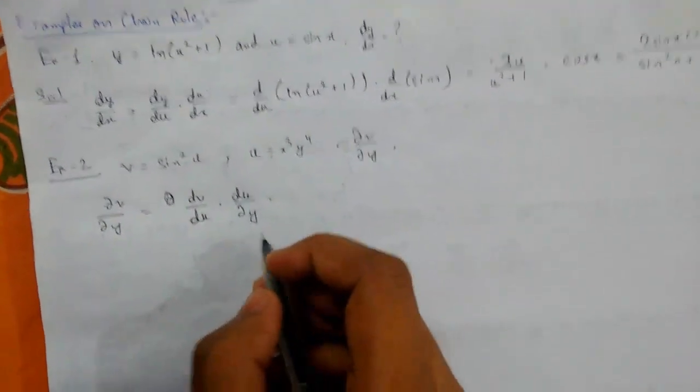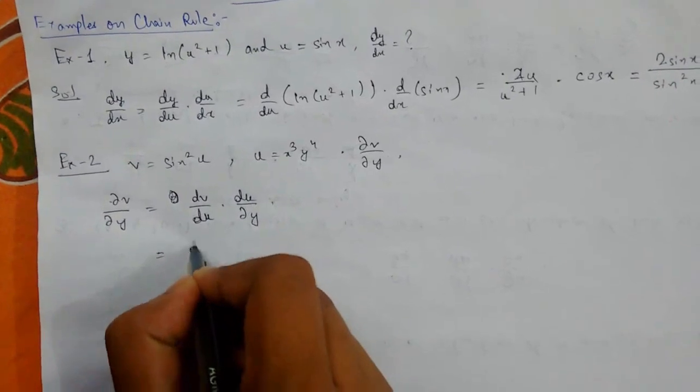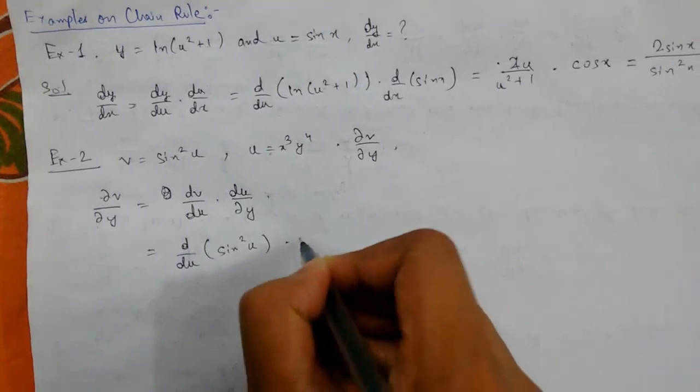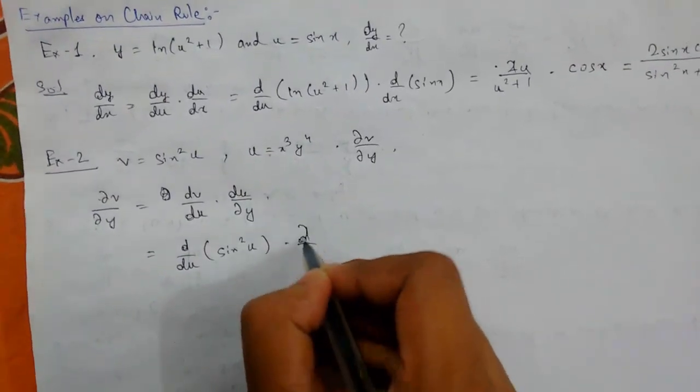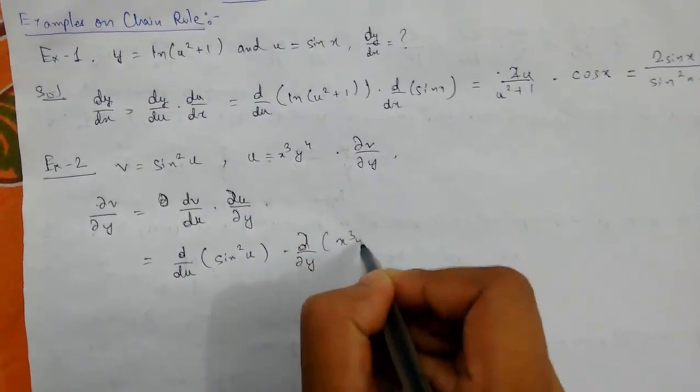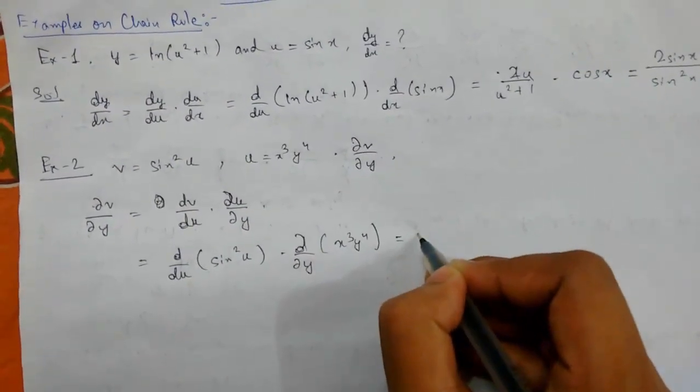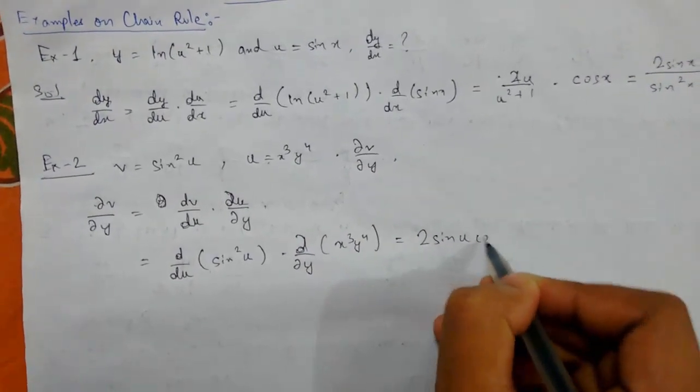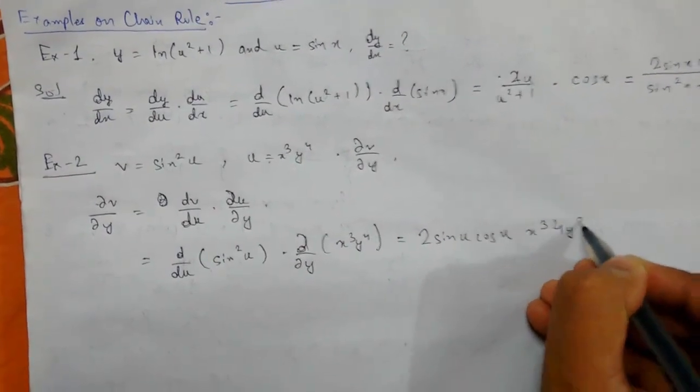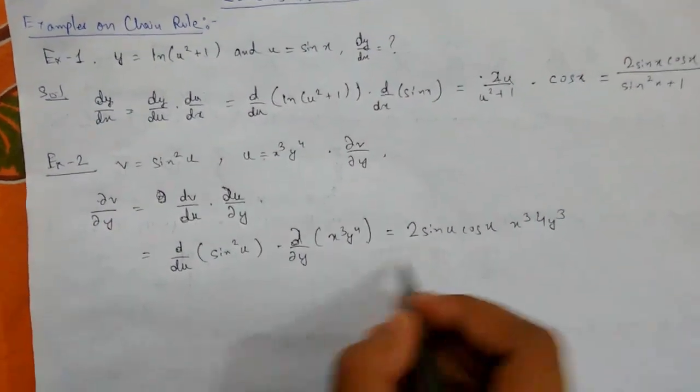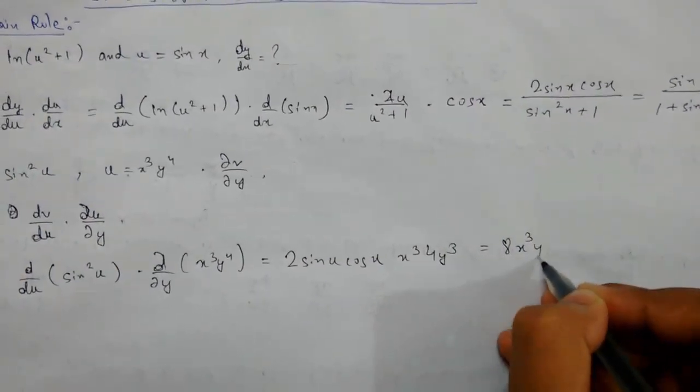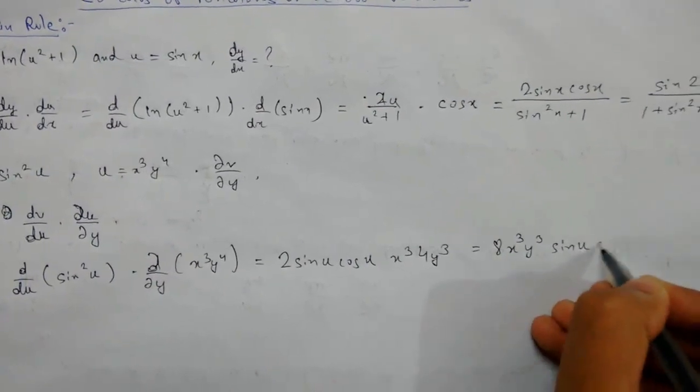We will calculate the values. d/du of sin²(u) times d/dy of x·y⁴. This will be 2sin(u)cos(u) times x·4y³ (keeping x constant). So we get 8x·y³·sin(u)cos(u).